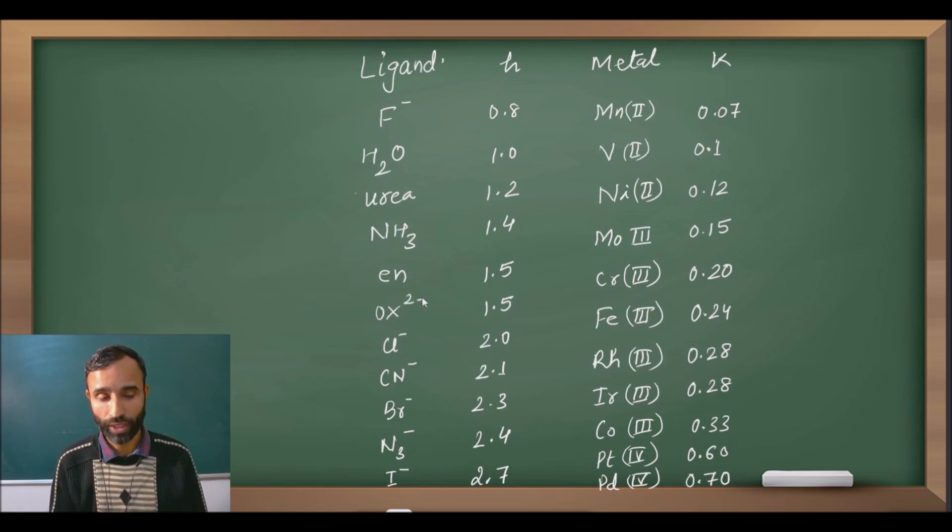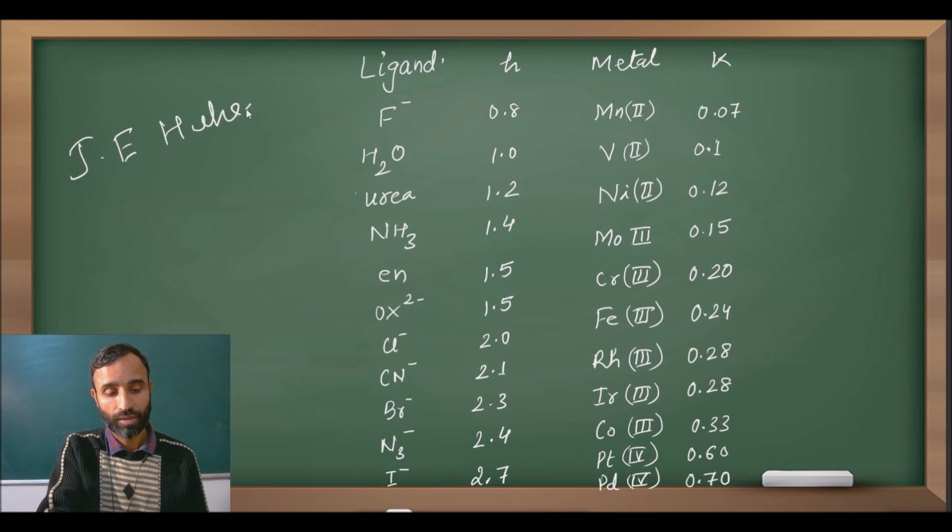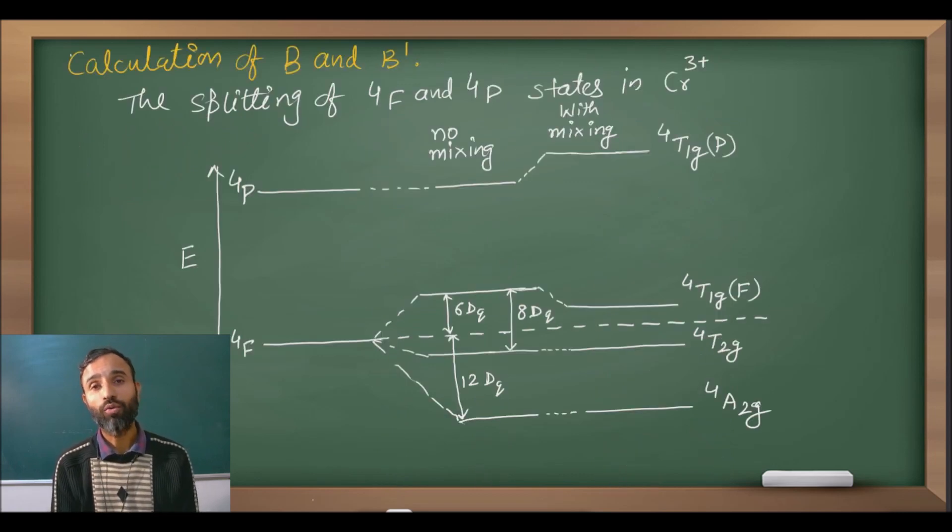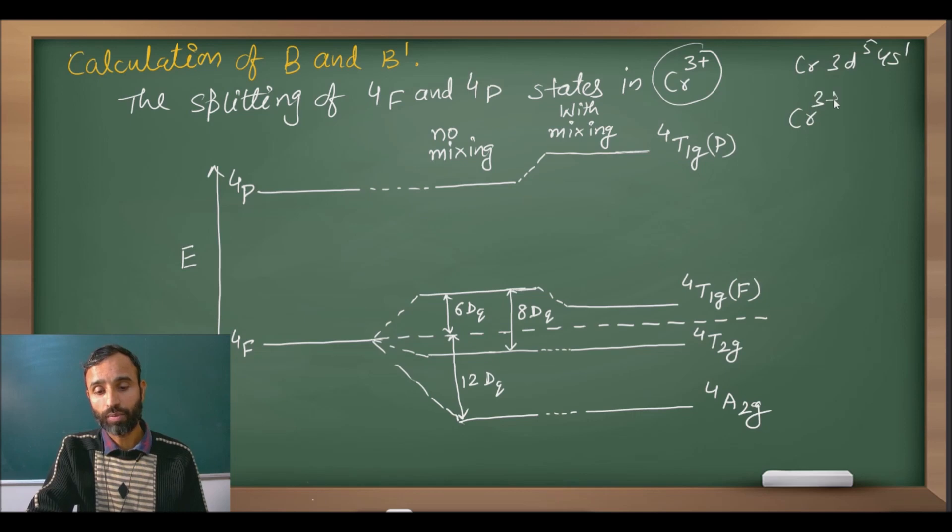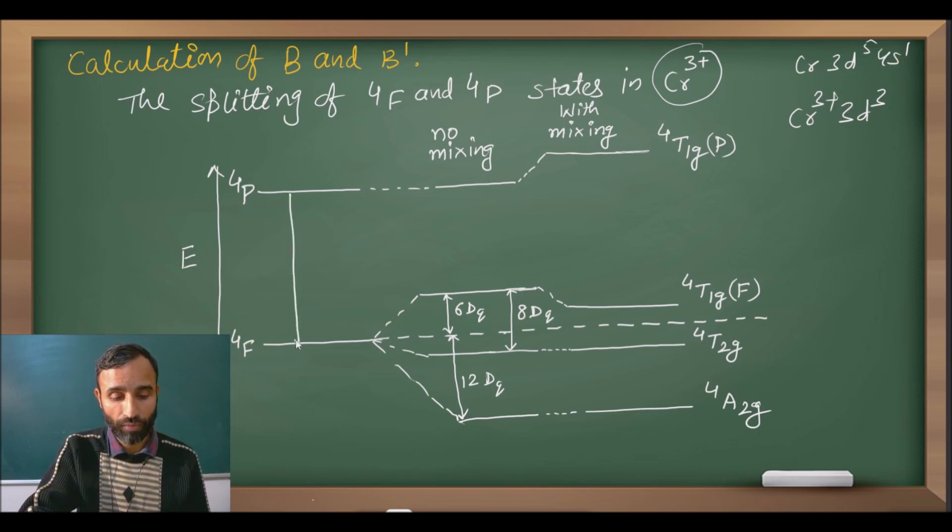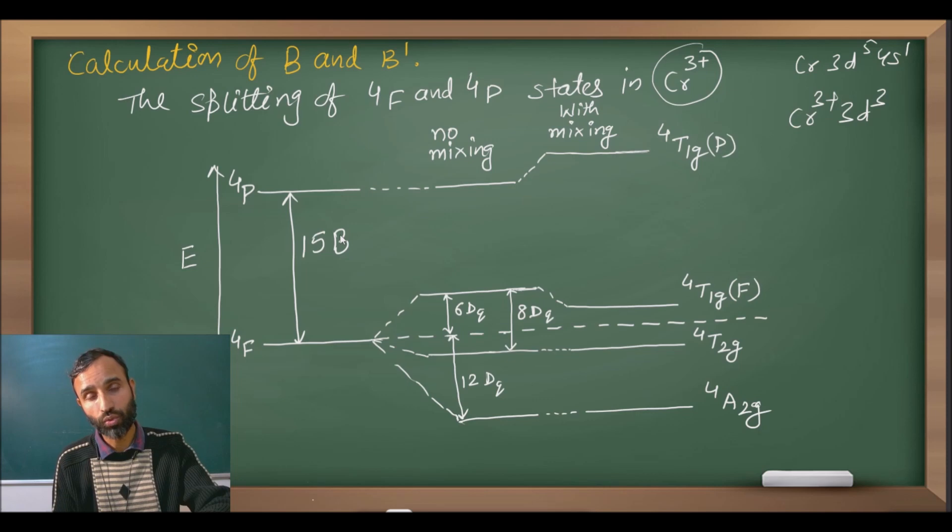This data is taken from J.E. Huheey, James Huheey book. You can refer that book if you wish to. Now how to calculate the value of B and B dash? In case of Chromium 3 plus, Chromium is 3d5 4s1. Chromium 3 plus is 3d3. For 3d3, the ground state is 4F and same multiplicity state is 4P. So difference between 4P and 4F, that is 15B. So if you know the difference between these two states and it is equal to 15B, you can calculate B easily. Okay.